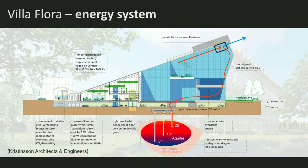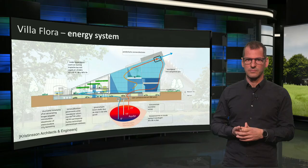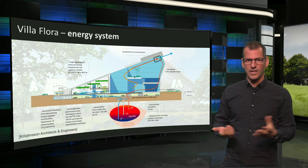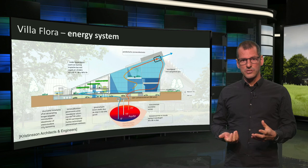In summertime, cool water from the well is used to cool down the building. But due to irradiation and internal heat sources, air will warm up anyway and rise to the roof. Here, the story starts all over again. It almost seems so simple, you wonder why it is not used everywhere.